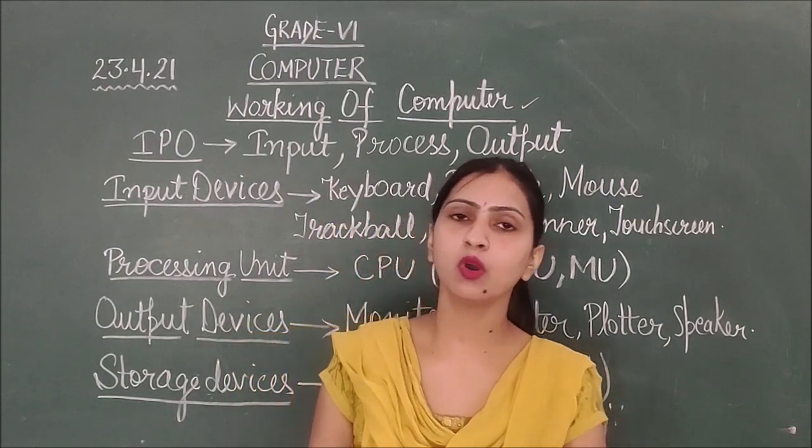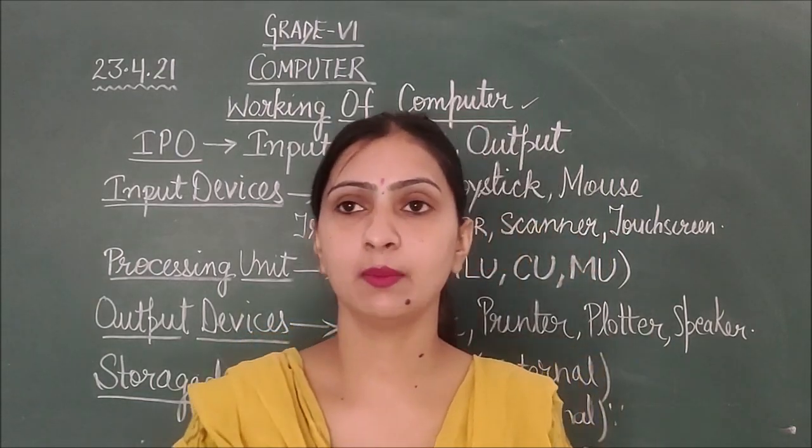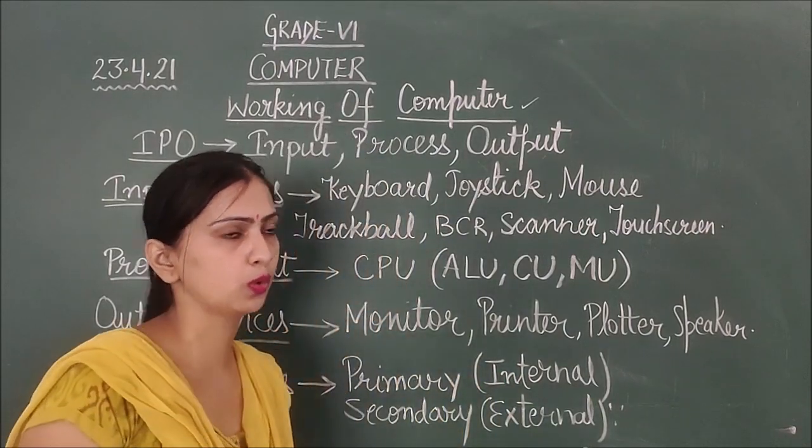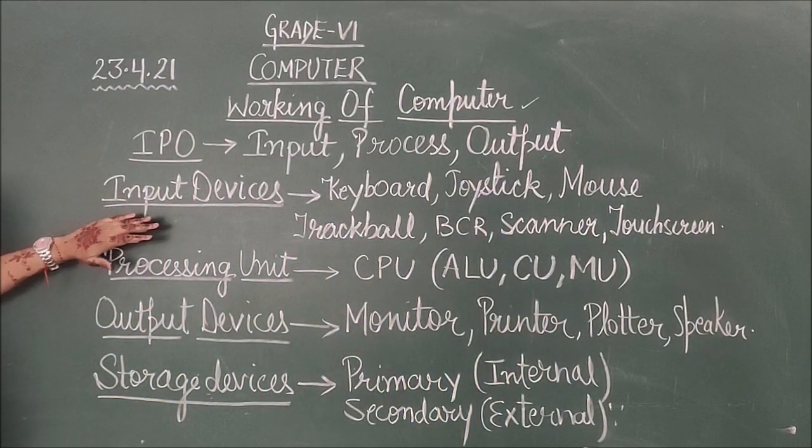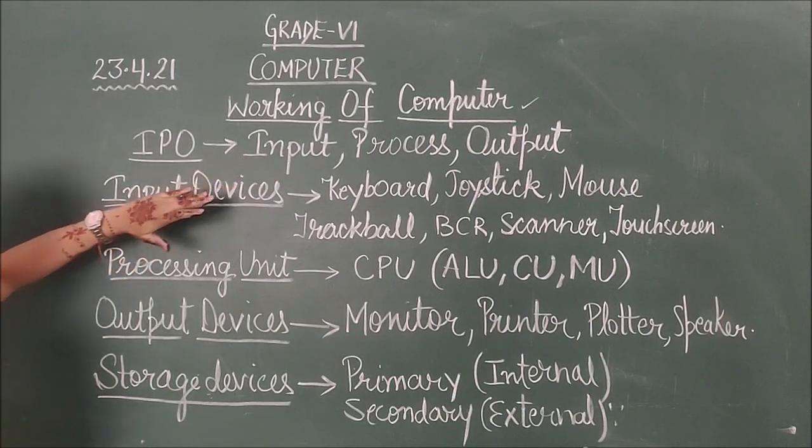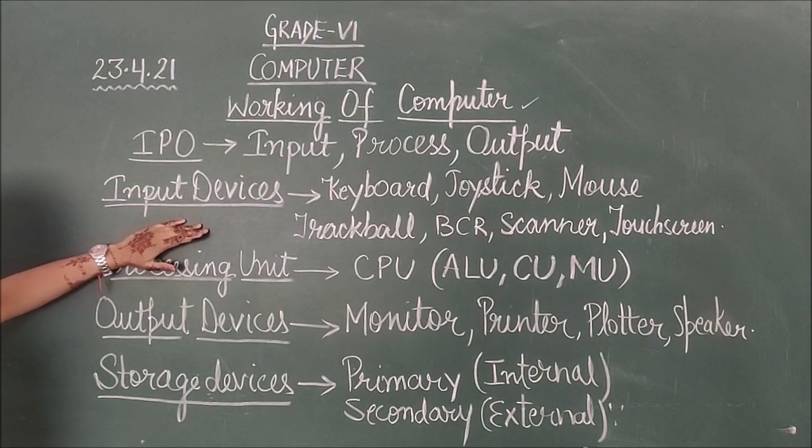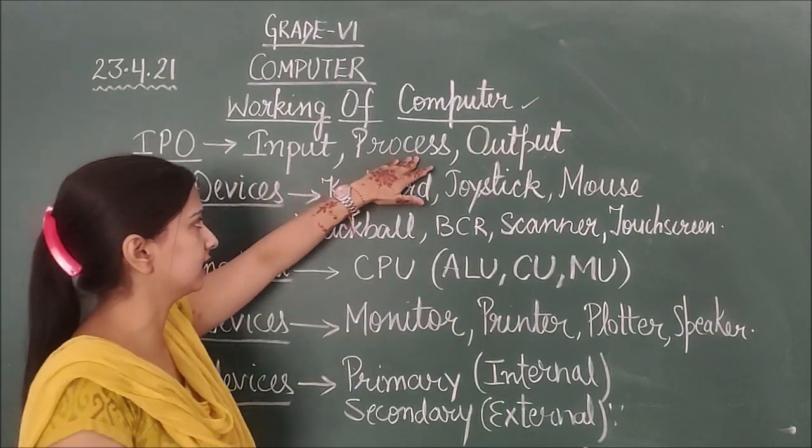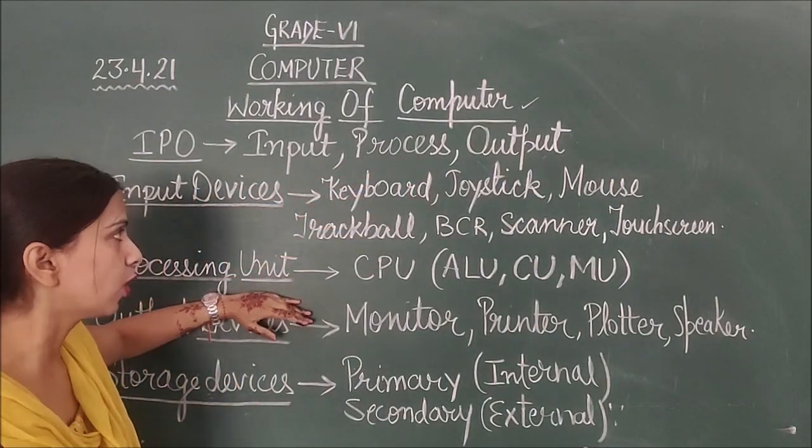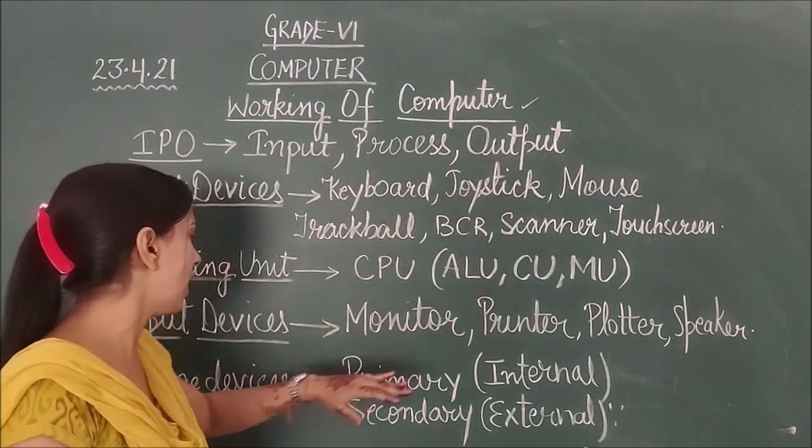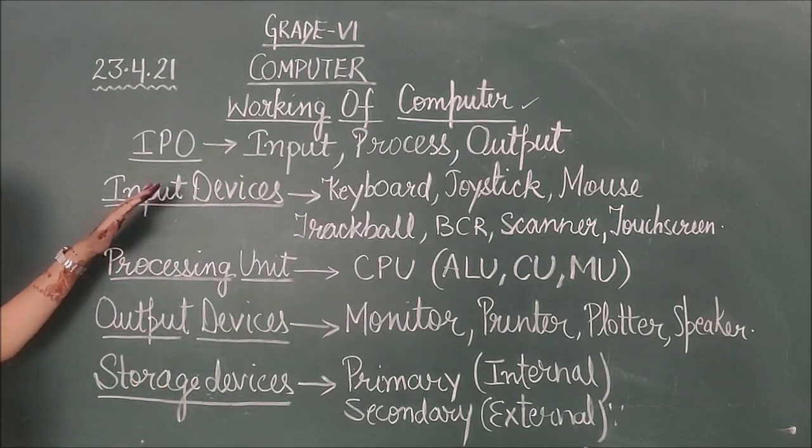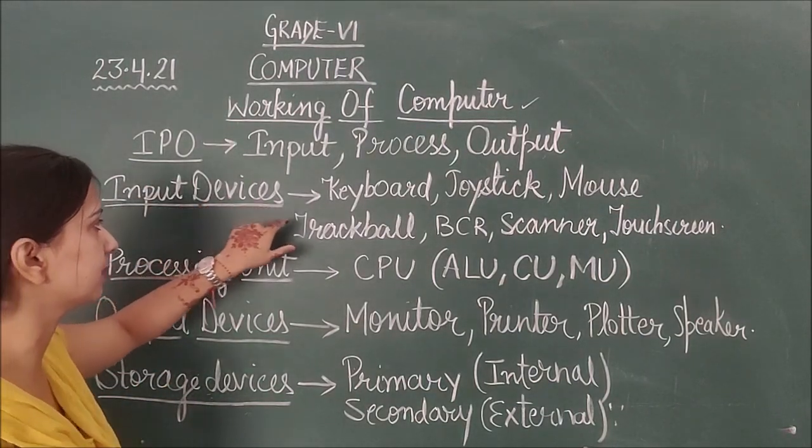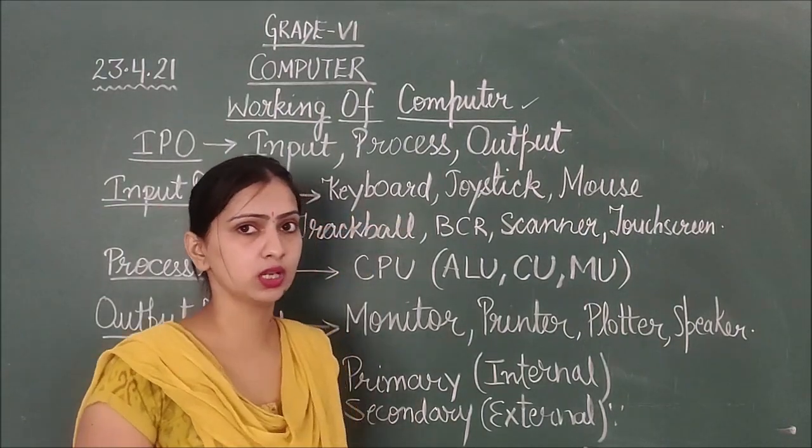Similarly there will be many more examples. Like example washing machine and so on. We can identify which devices provide input, which devices are helpful in processing, which devices give us output. This is how we start. Input devices, first we have to understand is keyboard.